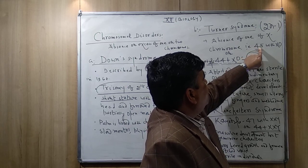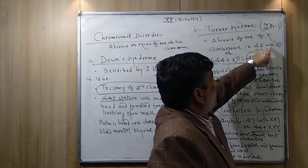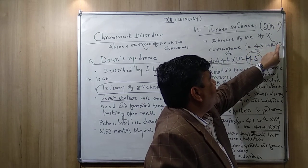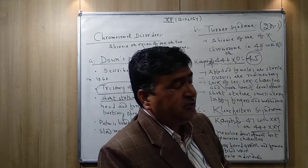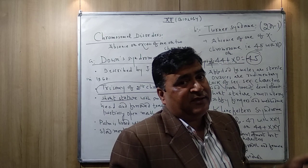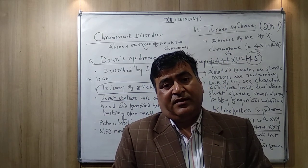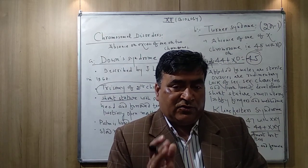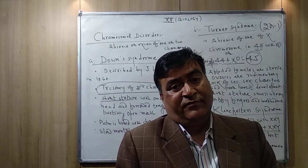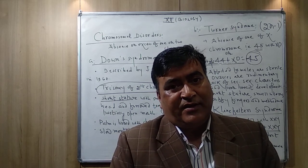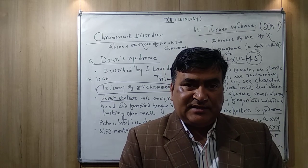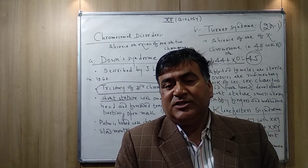In your textbook it is written as 45,XO — the 45 already includes the X chromosome, so do not add them separately to get 46. Overall in Turner syndrome the total number of chromosomes is 45, not 46, because one X chromosome is missing.